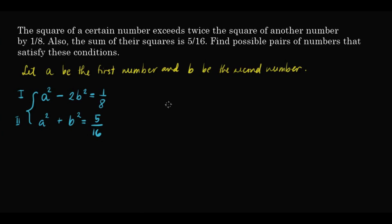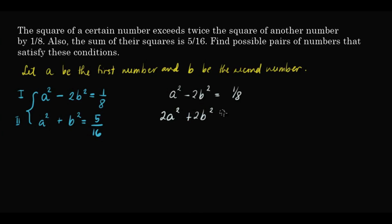The best method to use here is elimination by addition. If we multiply the second equation by 2 and add it to the first equation, it will cancel b squared. So we have a squared minus 2b squared equals 1 over 8, and then multiplying the second equation by 2 gives us 2a squared plus 2b squared equals 5 over 8.